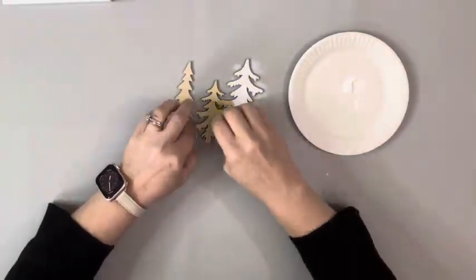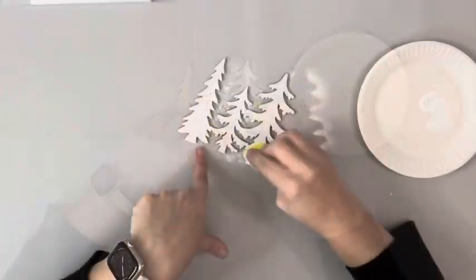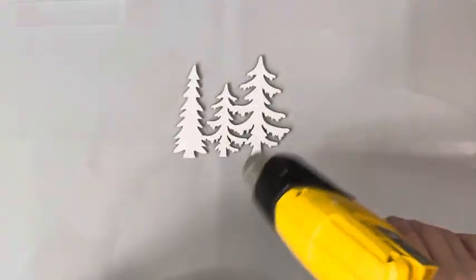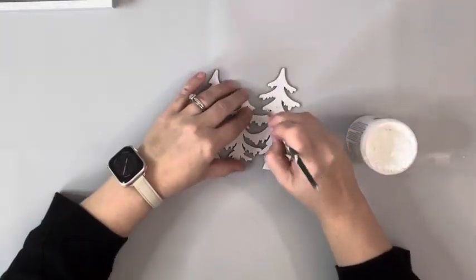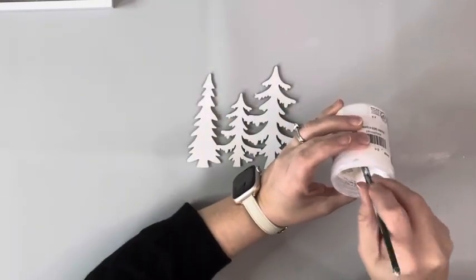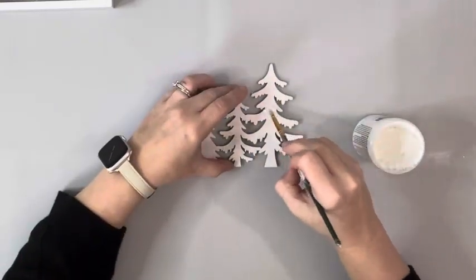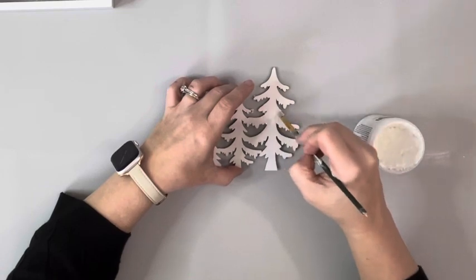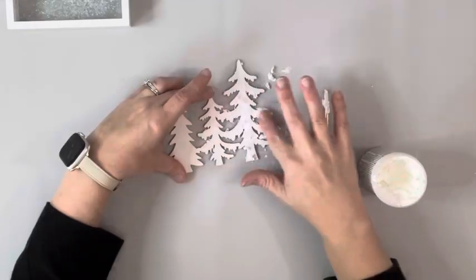I took white acrylic paint and a sponge and applied one coat. After it dried, I took this Snowtex, which I got from Amazon, but you can get it at Joanne's or Michael's as well.